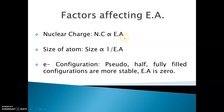The second factor is size of atom. Size and electron affinity are inversely proportional to each other, meaning if atomic size is less, electron affinity will be more. Because the size of an atom depends upon the nuclear charge — if size is less, nuclear charge is more, and that means electron affinity will be more.